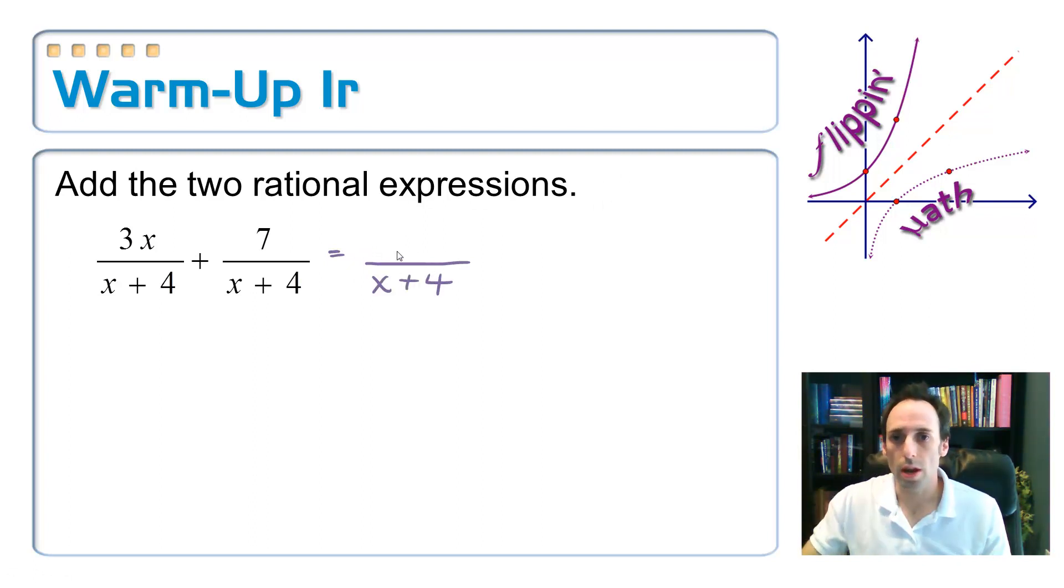And just add up the two tops, three x plus seven. And then if you could, you would simplify this. But up at the top, you can't factor anything out of three x plus seven. So that is it. It is done.